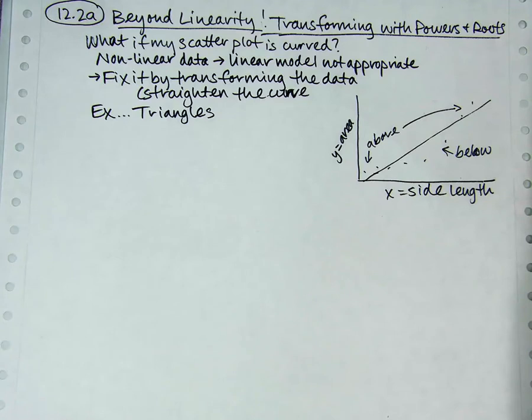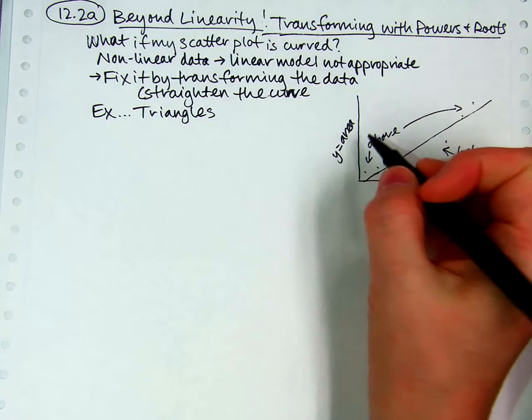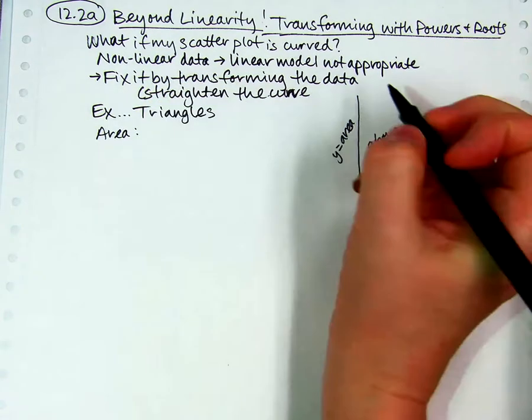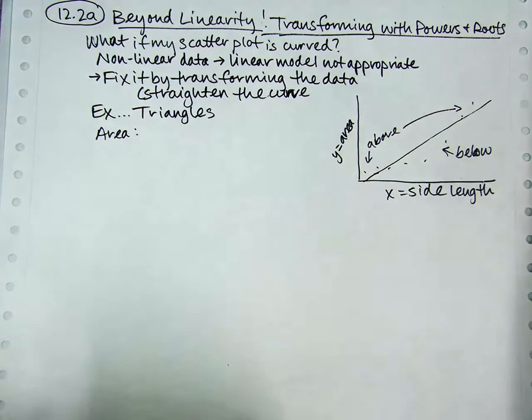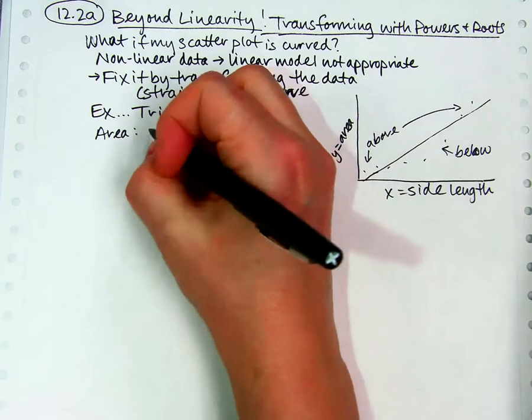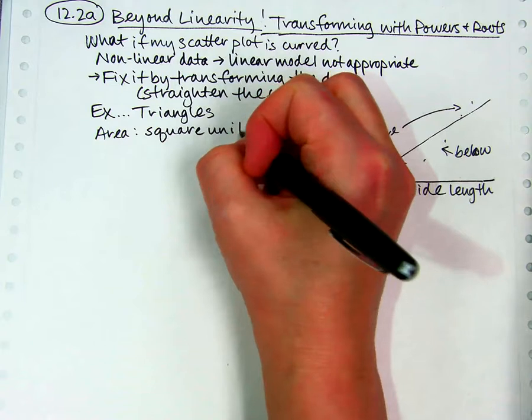We're going to think about how to straighten that curve. And so we're going to use what we know about geometry. What do we know about area? Area of a triangle is one half base times height. But in general, it's based on squaring something. It's based on square units. And if you know that, then that would help you to figure out how to straighten this curve.